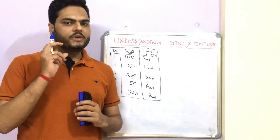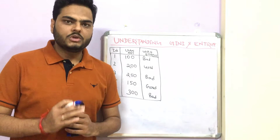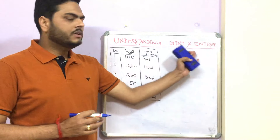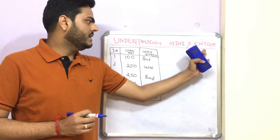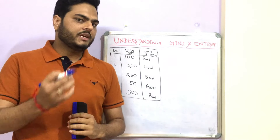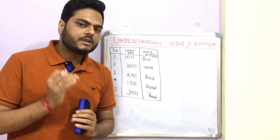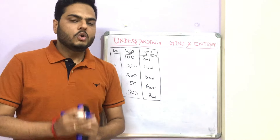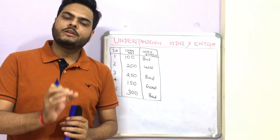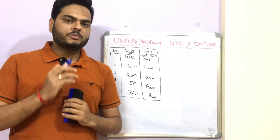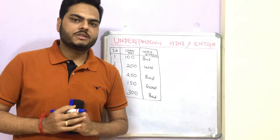Let's try understanding the very important concept from a decision tree point of view known as Gini and entropy. This is also known as information gain and Gini index. These are tree splitting criteria — one of the most important concepts to understand in decision trees and also a common interview question when you go for data science interviews.